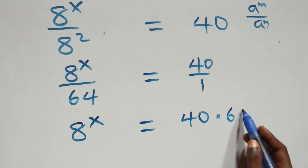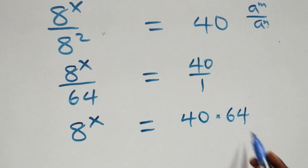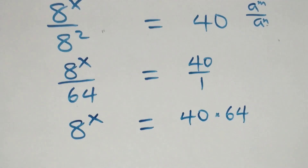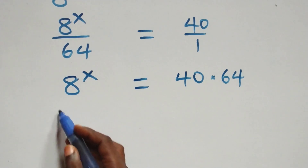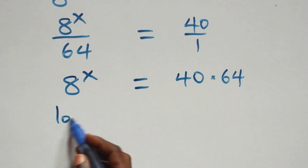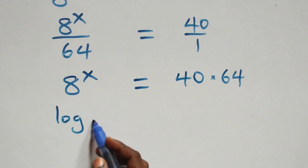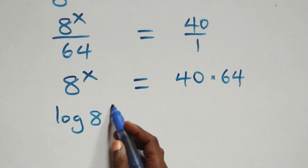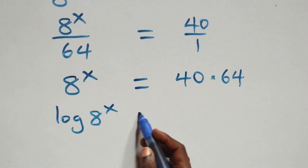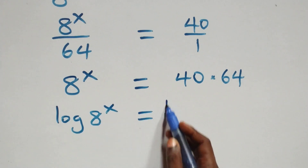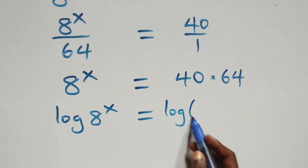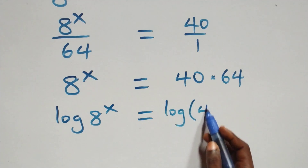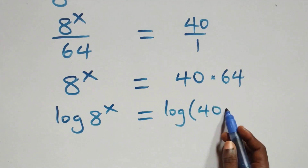The next step: we take the log on both sides. We have log of 8 raised to power x equals log of 40 times 64.